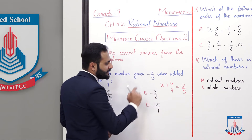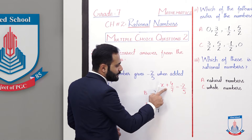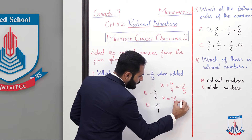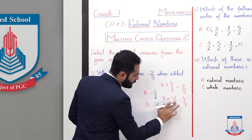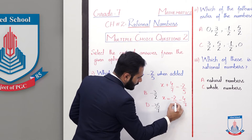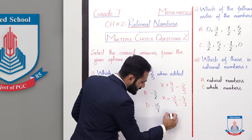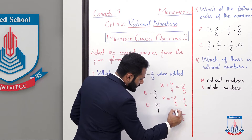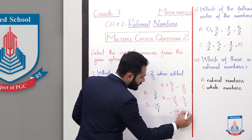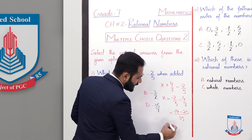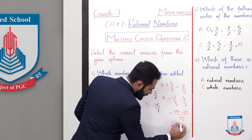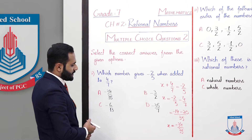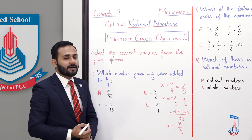Hum is x ko find out karna hai. Is x ko find out karne ke liye, 4 by 7 yahan par add up ho raha hai, to wahan par jakar yeh subtract ho jaega. So x equals minus 2 by 5 minus 4 by 7. Ab hum is ka denominator nikalenge: 5 × 7 = 35, and 7 × 2 = minus 14, minus 5 × 4 = 20. So minus 14 minus 20 = minus 34 by 35. So this is the value of x: minus 34 by 35.